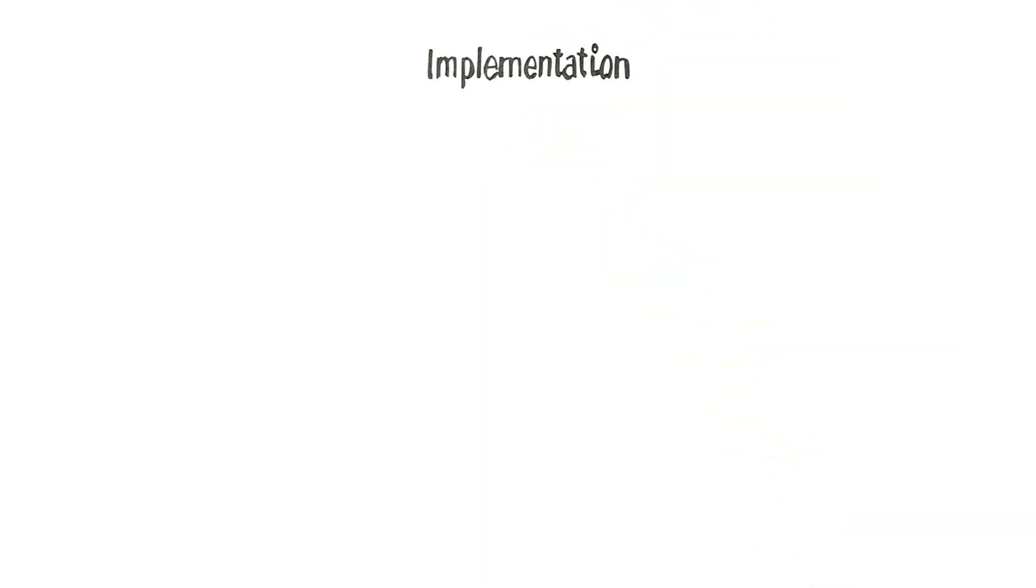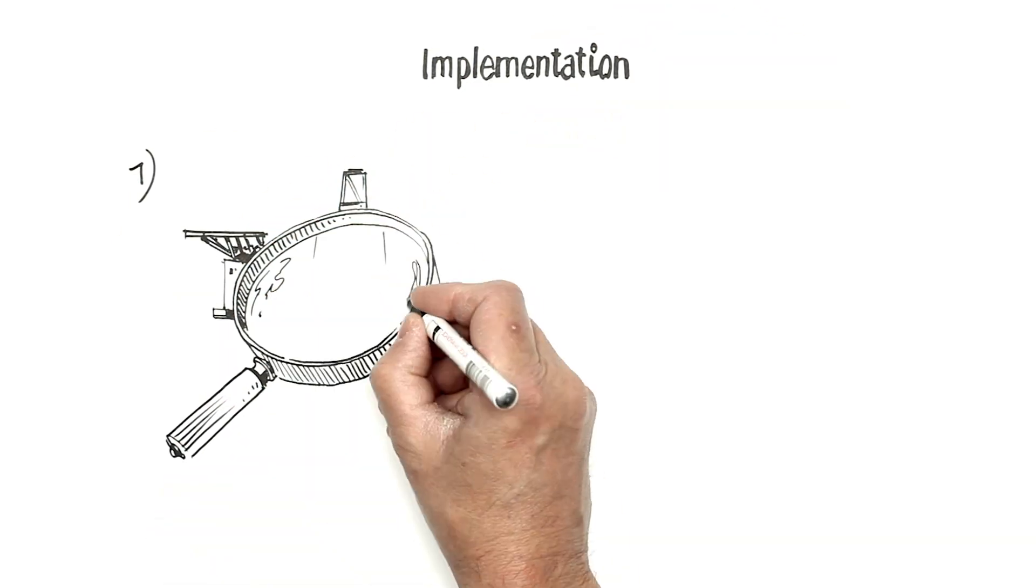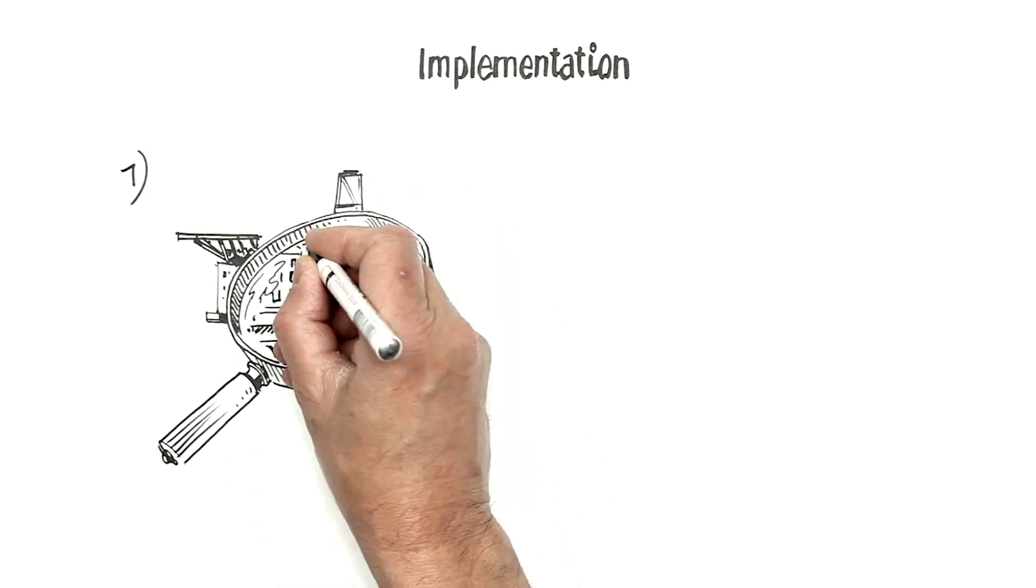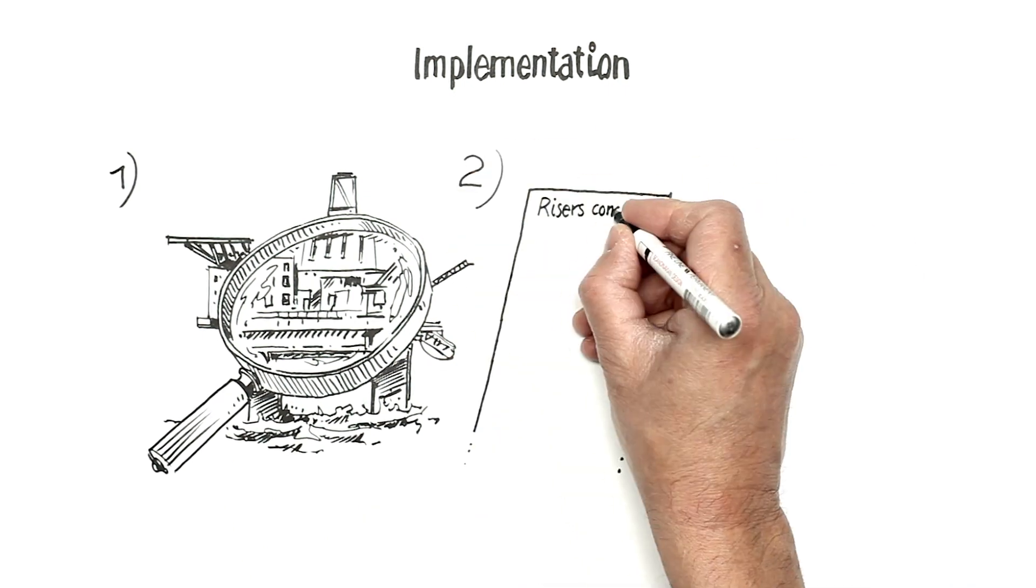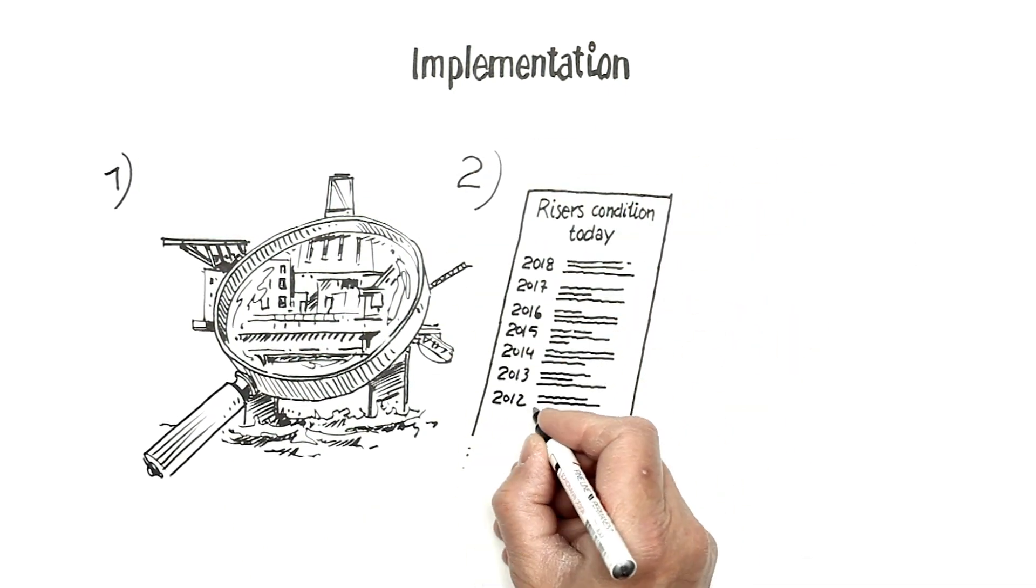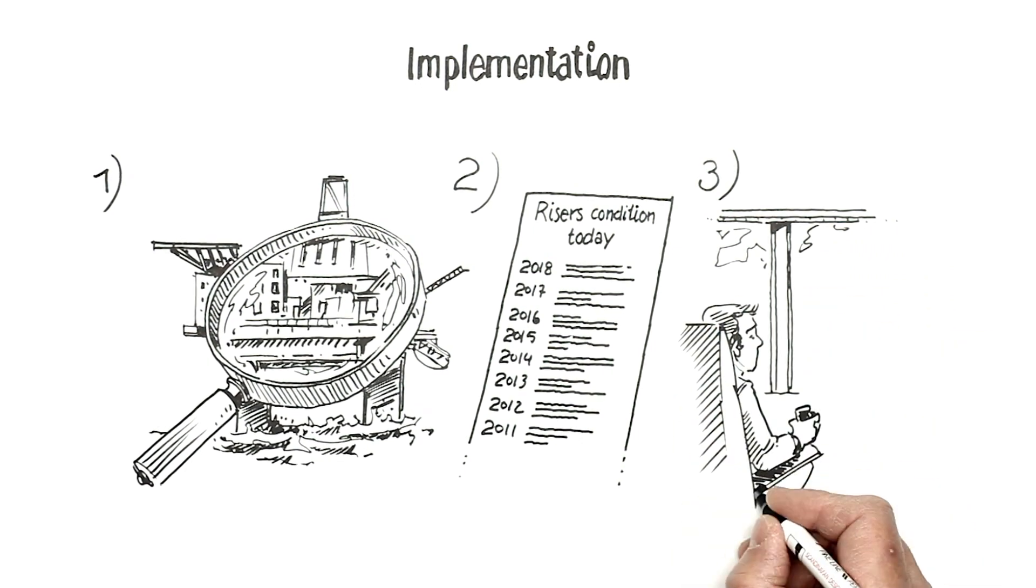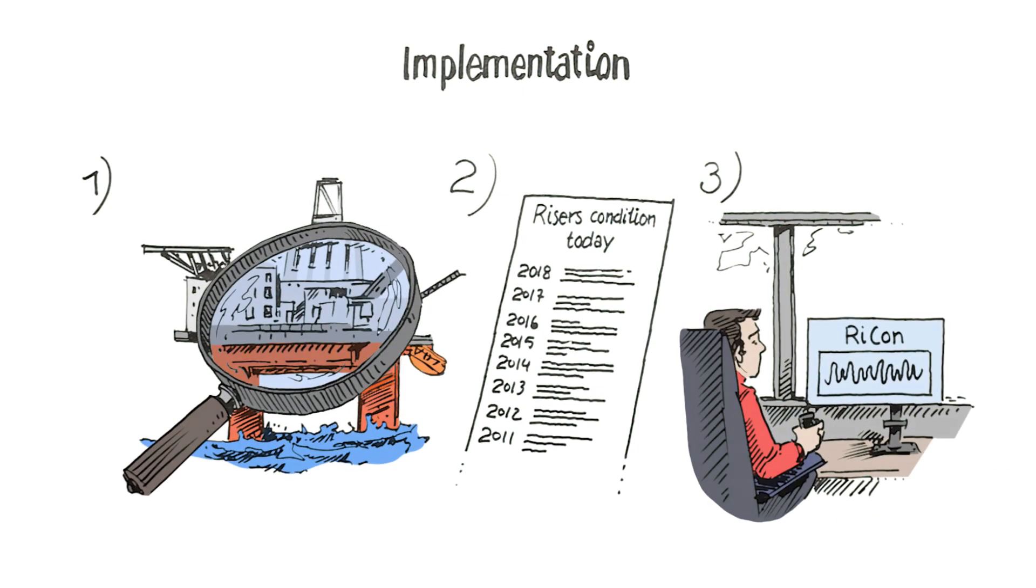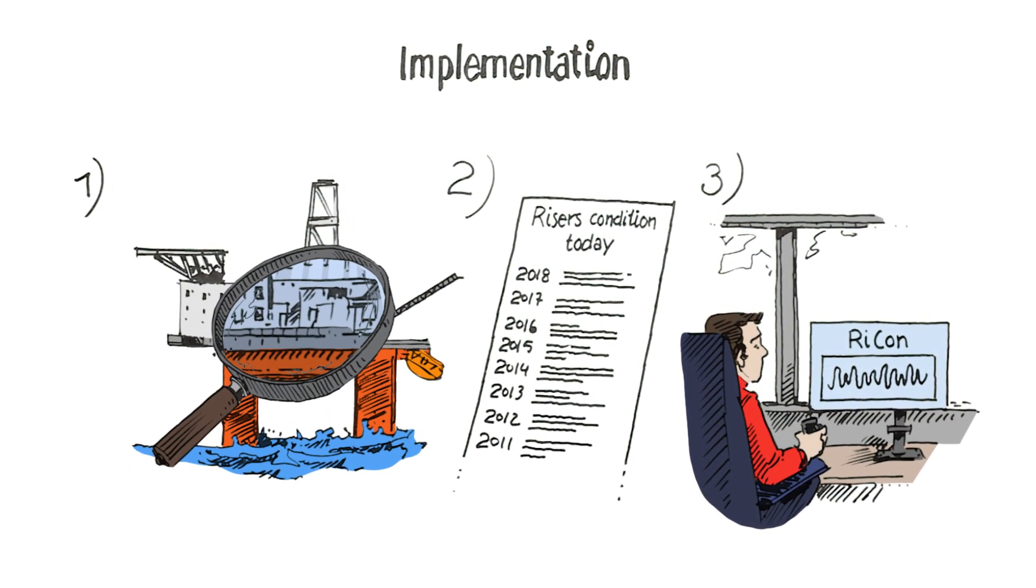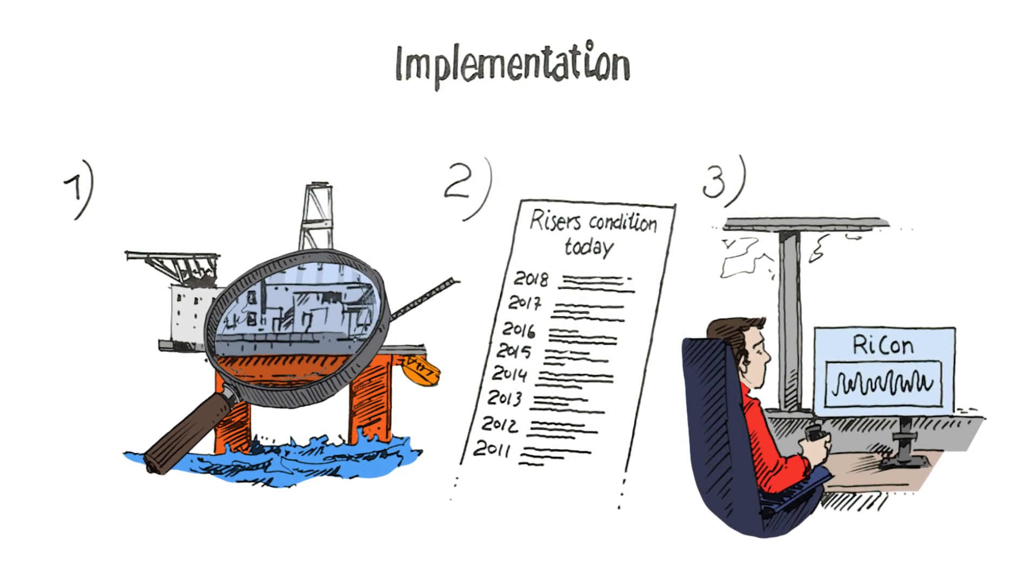The implementation process of Rikon consists of eight steps and is mainly executed by MH Worth. In short we analyze and establish a model for the specific rig. Then we look at historical data to determine the riser conditions. The last steps are the system implementation and crew training. We know what downtime means therefore our implementation process has very little interference with normal rig operations.